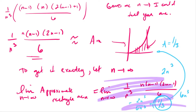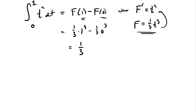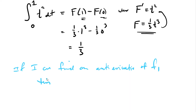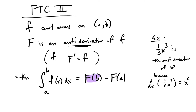We computed the area under the curve using sums and got one-third — and notice that with the Fundamental Theorem of Calculus Part 2, as long as I can find an antiderivative, I can just plug numbers in to find the areas. That's an amazingly powerful idea. If I can find an antiderivative of f, the Fundamental Theorem Part 2 says all I need to do is plug numbers into the antiderivative. So the key question is: how do I find an antiderivative?